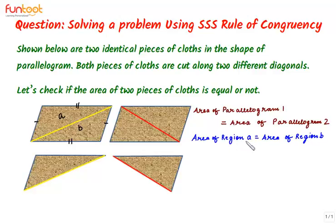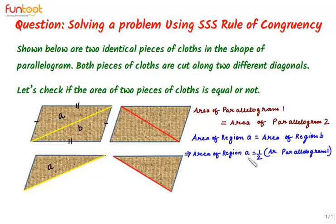Since area of region A is equal to area of region B, and after cutting we can see that this is region A, the area of region A will be half of the area of parallelogram 1. This implies area of region A is equal to half the area of parallelogram 1.